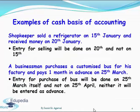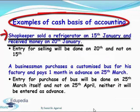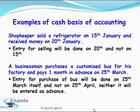Let's understand it with examples. Here are two examples of cash basis of accounting. In example one, a shopkeeper sells a refrigerator on 15th January but receives the money on 20th January. So if he is following cash basis of accounting, his entry for sales will be done on 20th January and not on 15th January.